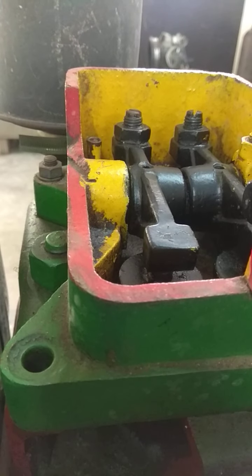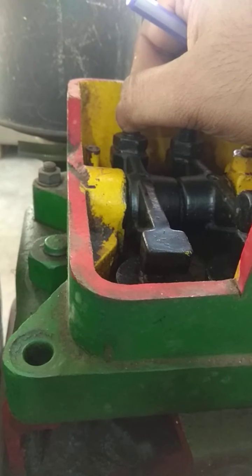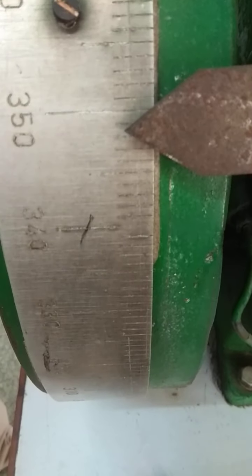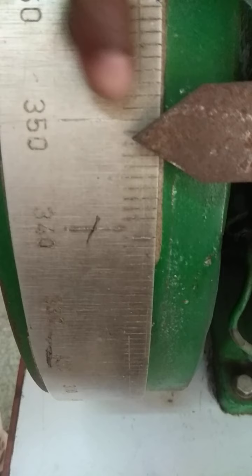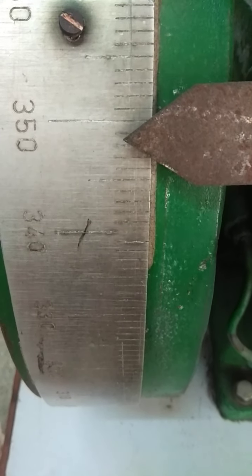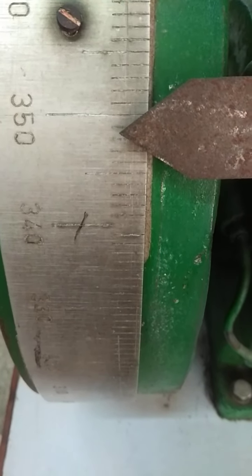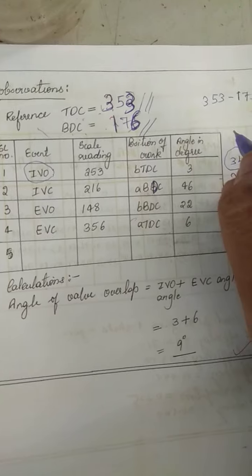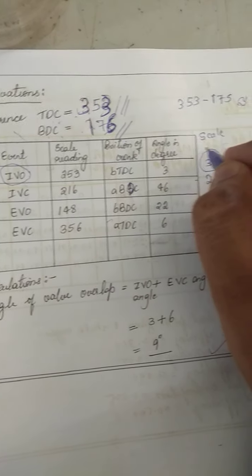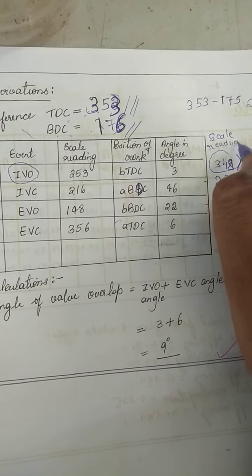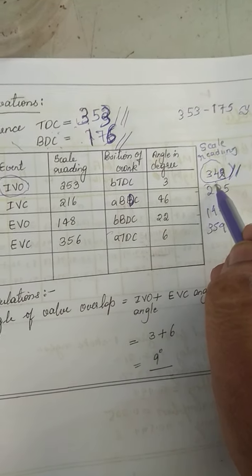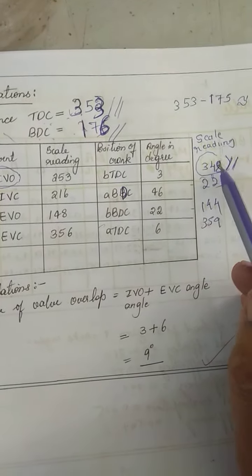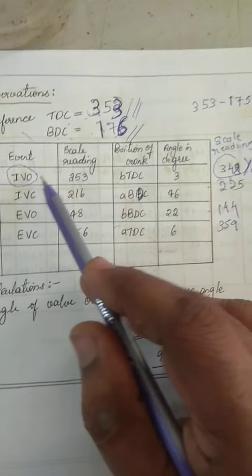The wheel has stopped and the valve is just tightened. We note down the inlet valve position by looking at the wheel graduations. The angle is 348 degrees. Note down the value of IVO — inlet valve opening — as 348. The scale reading for this experiment is 348 for inlet valve opening.